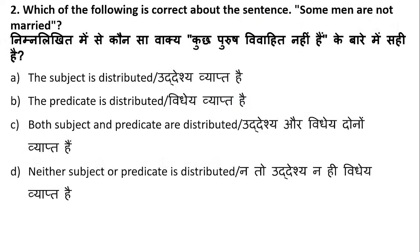Next question: which of the following is correct about the sentence 'Some men are not married'? The options are: subject is distributed, predicate is distributed, both subject and predicate are distributed, or neither subject nor predicate are distributed.